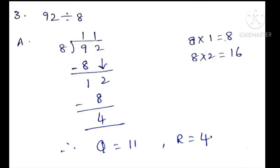Then see the table: 8 ones are 8, 8 twos are 16. Compared to 12, 16 is bigger. So we take 8 ones are 8. This 1 we write above the line, and this 8 we write below the 12. Then subtract: 12 minus 8 — counting on fingers after 8: 9, 10, 11, 12 — you get 4. So 4 is the remainder. The quotient is 11. Therefore Q = 11, R = 4.